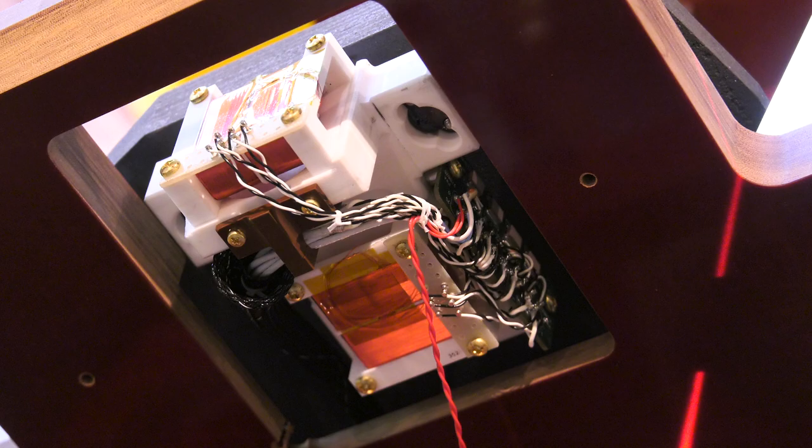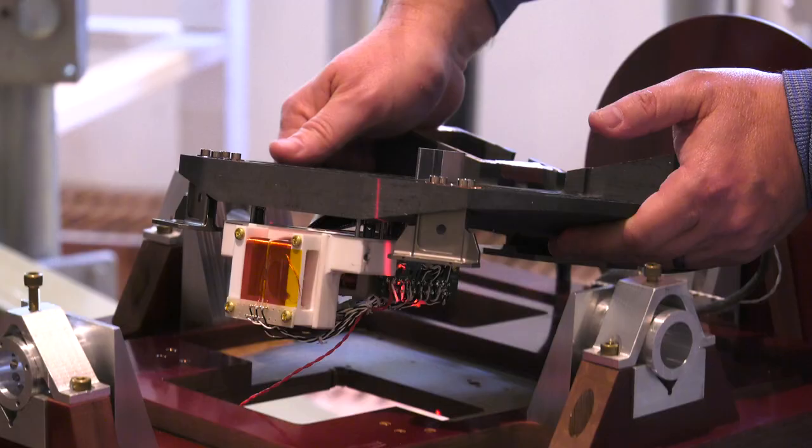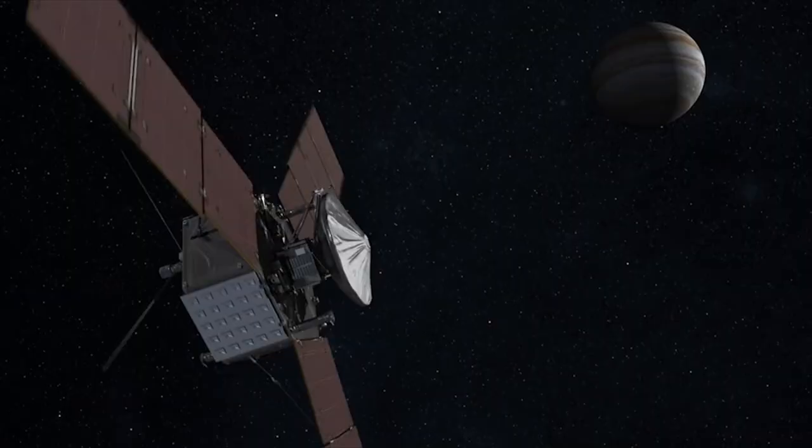And of course part of that is the result of the star cameras that we're able to fly with our sensors so that we can determine the absolute orientation in space of these sensors. If we did not know the orientation of the sensor as well as we can determine it with the star cameras, we would lose accuracy in the vector measurement. So we carry four star cameras with our two magnetometer sensors.